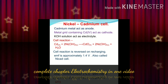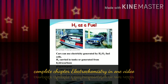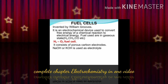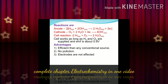A schematic diagram has been given along with the reactions that take place, showing the complete cell reactions in the nickel-cadmium cell. Now, hydrogen as a fuel is discussed — how hydrogen can be used. This is the hydrogen fuel cell with a complete description. The fuel cell was invented by William Grove; it consists of porous carbon electrodes. The complete cell reaction is: 2H₂ + O₂ → 2H₂O. It is highly efficient.